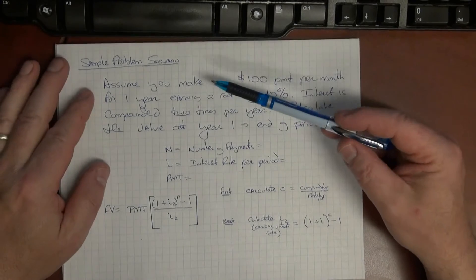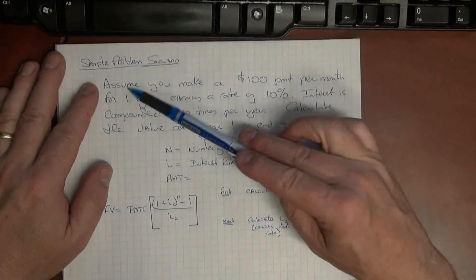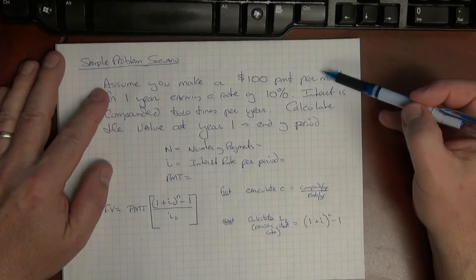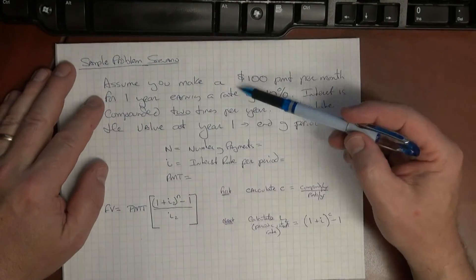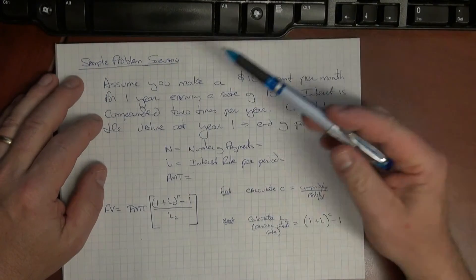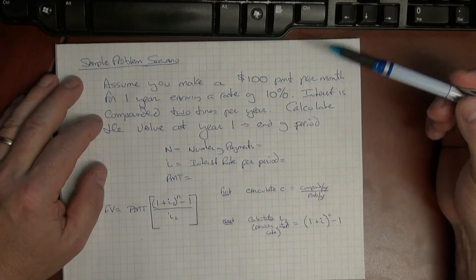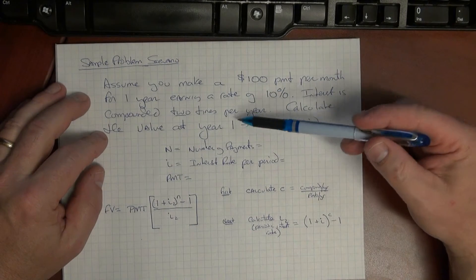So I've just done a simple example. Assume you make a hundred dollar payment per month for one year earning a rate of 10 percent. Interest is compounded two times a year. Calculate the value at the end of year one.